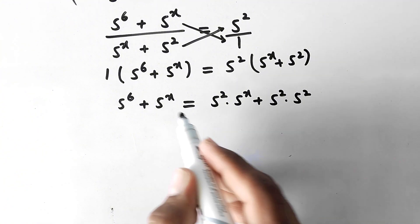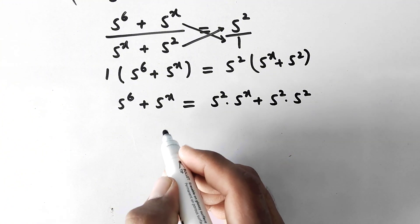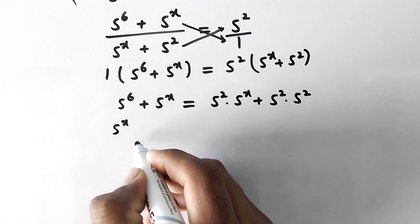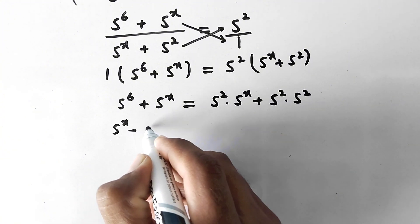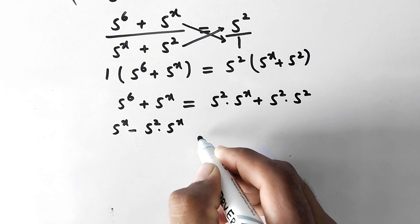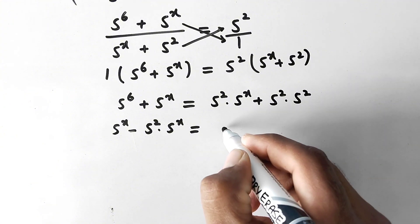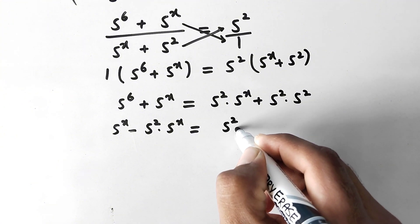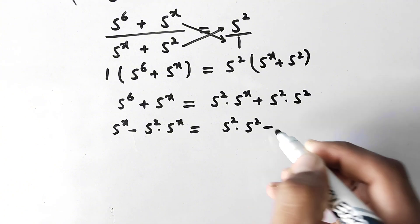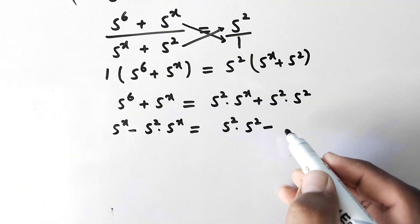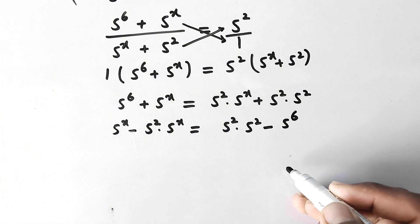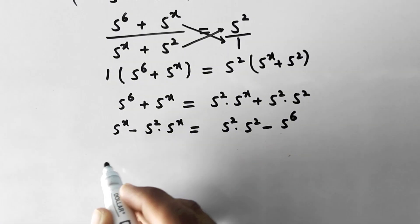In the next step we take the x values to the left hand side, so we get 5 to power x minus 5 square times 5 to power x is equal to 5 square times 5 square minus 5 to power 6.